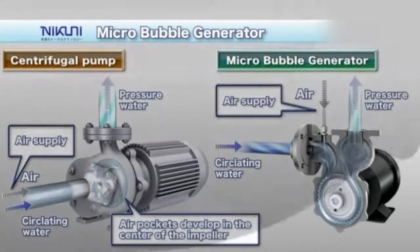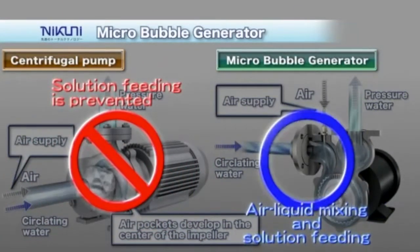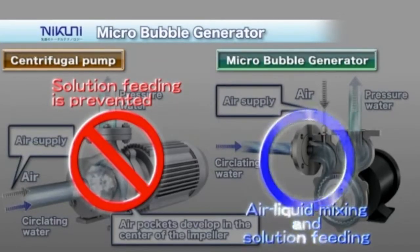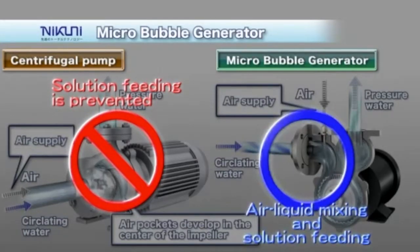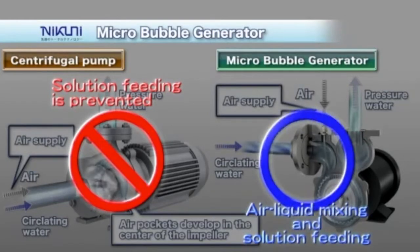The Nikuni KTM micro bubble generator uses a turbine mixing impeller to dissolve the air that has been drawn into the suction port, and then feeds the solution continuously under high pressure to your process.